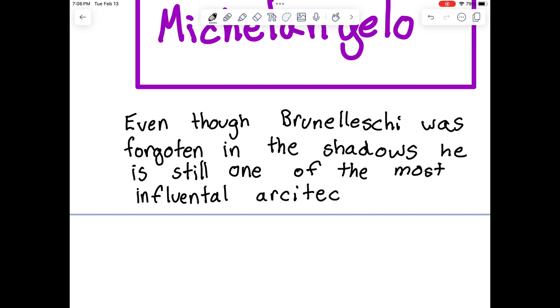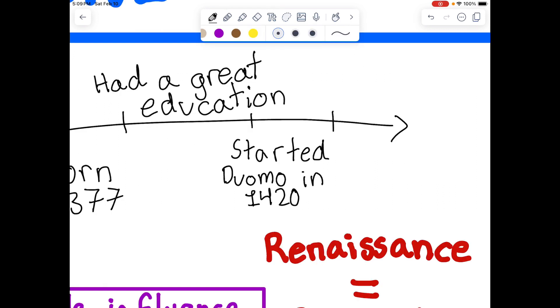Brunelleschi influenced some of the most famous people. For example, Leonardo da Vinci and Michelangelo. Many people see him as the first Renaissance architect, even though 500 years later he was forgotten in the shadows.